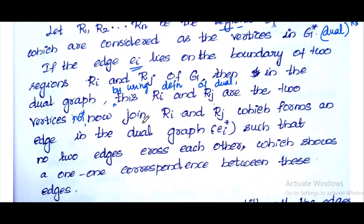Now we have to join Ri and Rj, which forms an edge in the dual graph, Ei star. So what do we do? There is a one-to-one correspondence between the two edges.